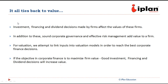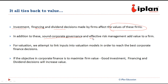All these three decisions try to achieve maximum value for the firm. Whether it is investment, financing, or dividend decision, the main objective is the same — to maximize the value of the firm. In addition to these three, sound corporate governance practices — for example, more number of independent directors, more number of meetings on critical issues — and an effective risk management system also add value to the firm. For valuation purposes, we try to link these inputs to our valuation models so that we can reach the best corporate finance decisions, and the ultimate objective is to maximize firm value.